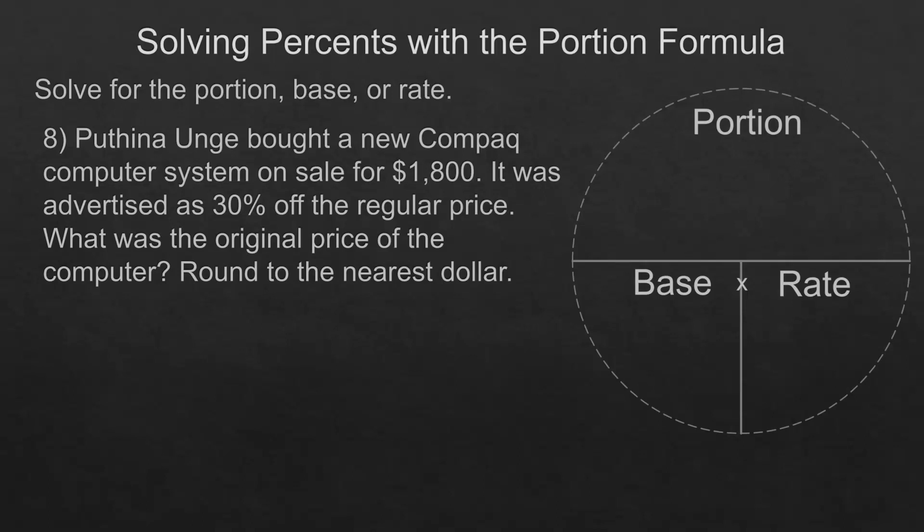Puthena Unge bought a new compact computer system on sale for $1,800. It was advertised at 30% off the regular price. What was the original price? Round to the nearest dollar. So the sell price is going to be the portion, because the 100% should be the base. That's going to be $1,800.